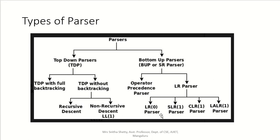Under bottom-up parser, there are two types: operator precedence parser and left recursive LR parser. Under LR parser, there are four categories: LR0, SLR1, CLR1, and LALR1. We are going to study all different categories of parser.